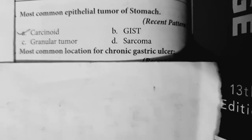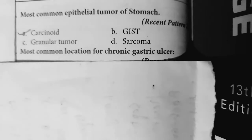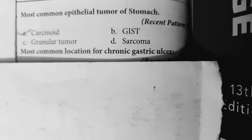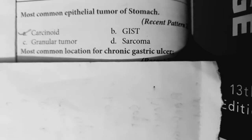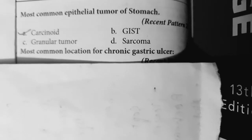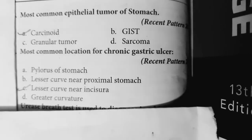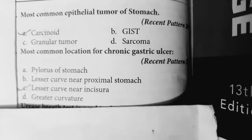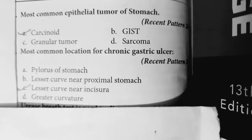Question 2: Most common location of chronic gastric ulcer. Ulcers can be duodenal ulcer or gastric ulcer. If it is a duodenal ulcer, it is most common in the first 2.5 cm of duodenum, and this is the most common site overall. If it is a chronic gastric ulcer, the most common site is on the lesser curvature of the stomach close to the incisura angularis.